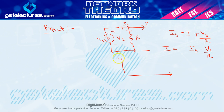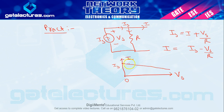To yeh jo aapka graph hai yahan par — I versus Vs ka. Agar aap dhyan se equation ko dekhen, to yeh jo aapka I hai wo Vs par depend kar raha hai. Jaise jaise aap Vs ko increase karenge, I aapka decrease hoga. Jab Vs ki value 0 put karenge to I, Is ke equal hoga. Jaise jaise aapka Vs increase hota chala jayega, I decrease hota jayega. Ideally aapka I, Is par constant hona chahiye tha. Yeh hota hai aapka practical current source — extra R lage hone ke kaaran, aapka I jo supply milne wali external circuit ko, wo decrease hote chalti jaati hai with respect to Vs.